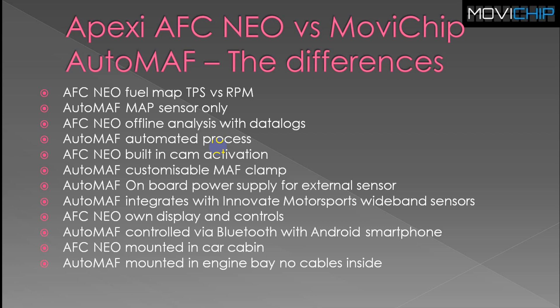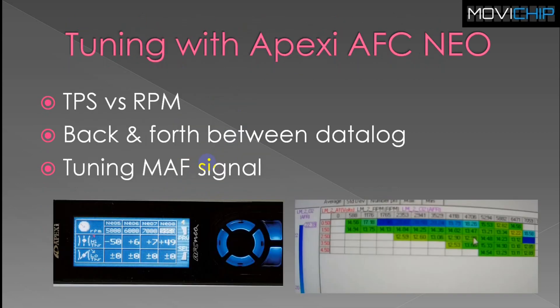The AFC Neo has its own display and control unit which you mount inside the car. The Auto Math is controlled via Bluetooth and an Android smartphone when you need to change settings. The Auto Math is mounted in the engine bay - you don't need to run any cables inside the car. There's a link in the top right to a video on tuning with the Apexi AFC Neo, but I'll do a quick summary here.